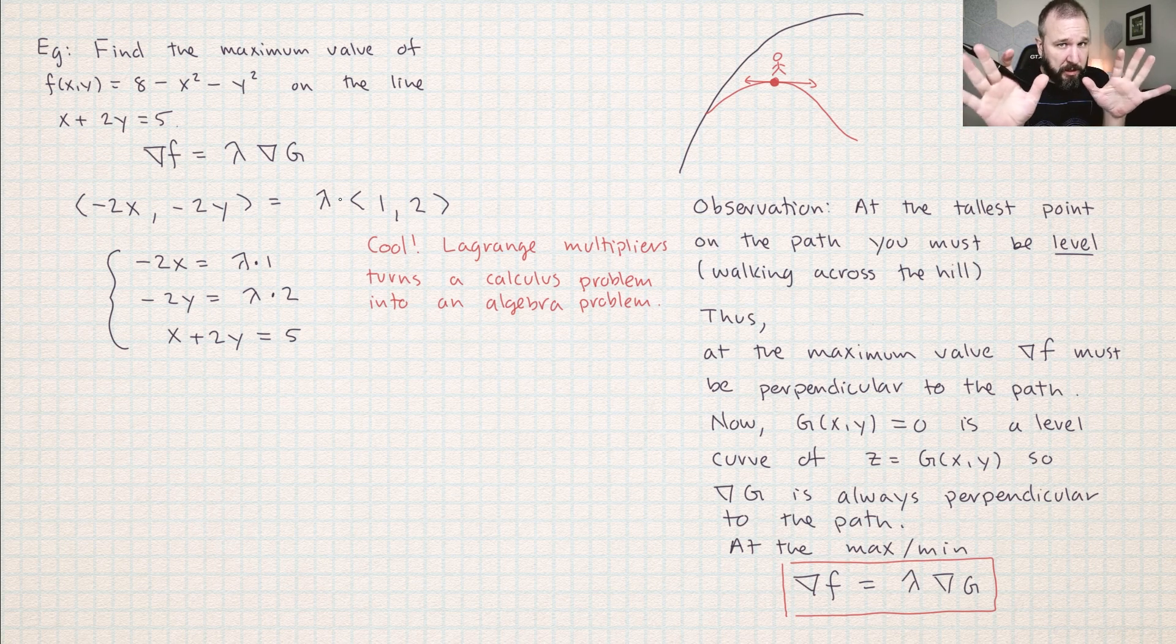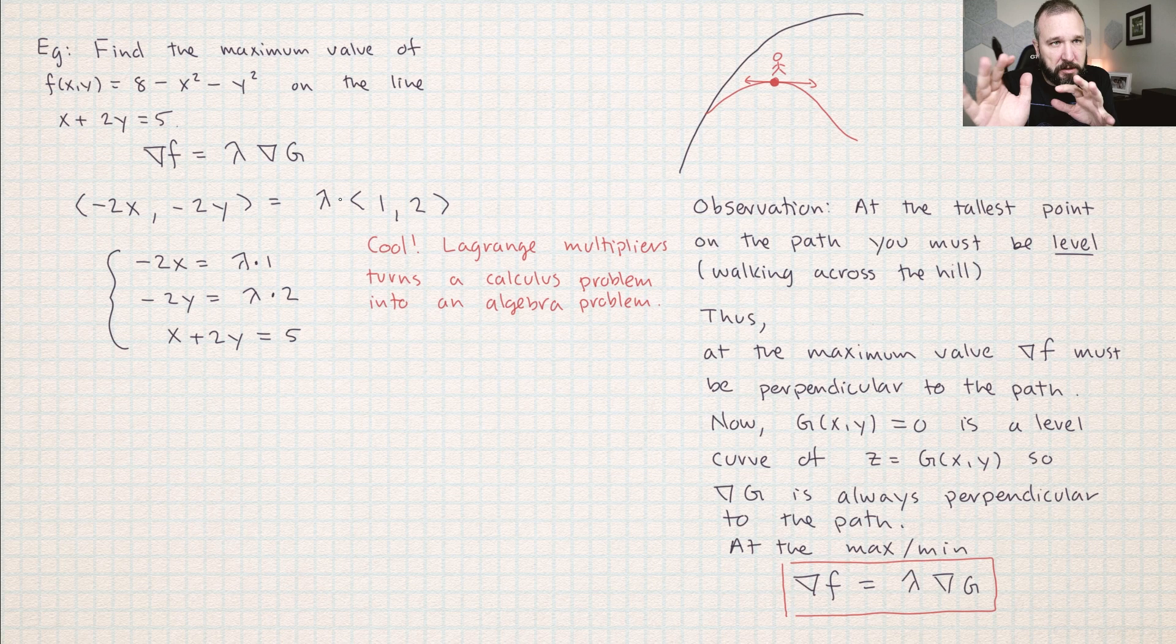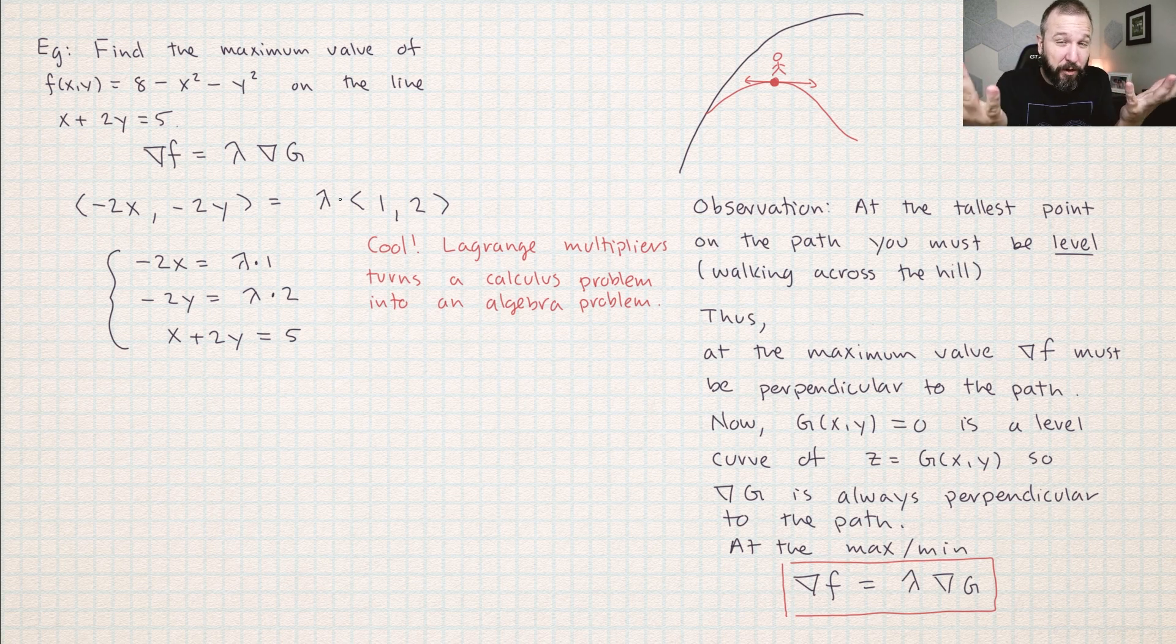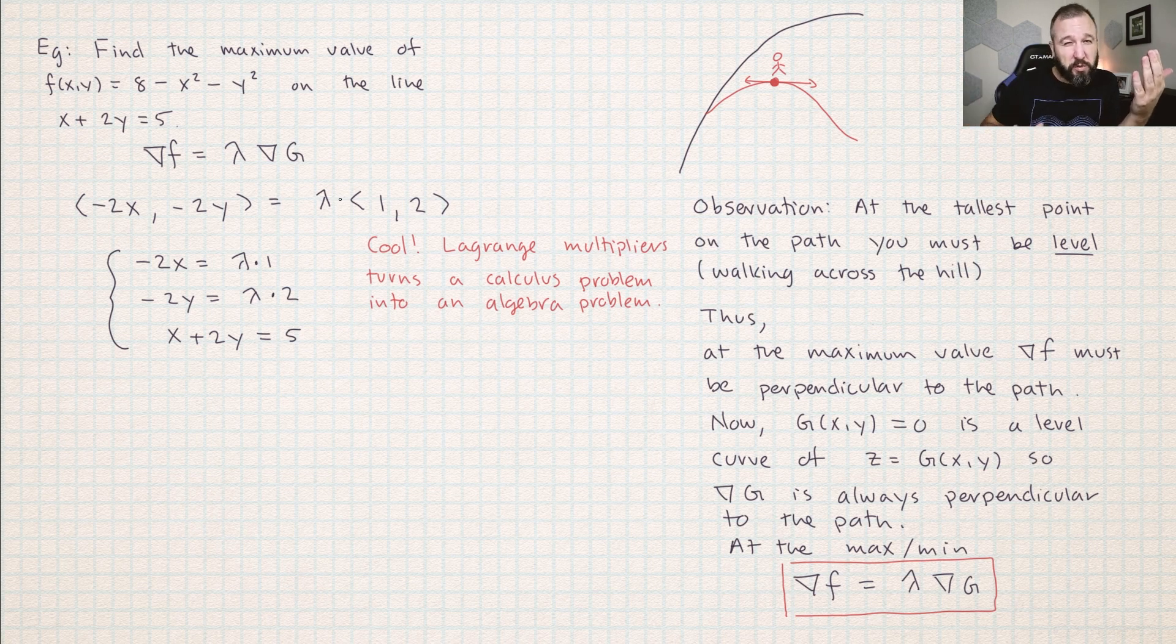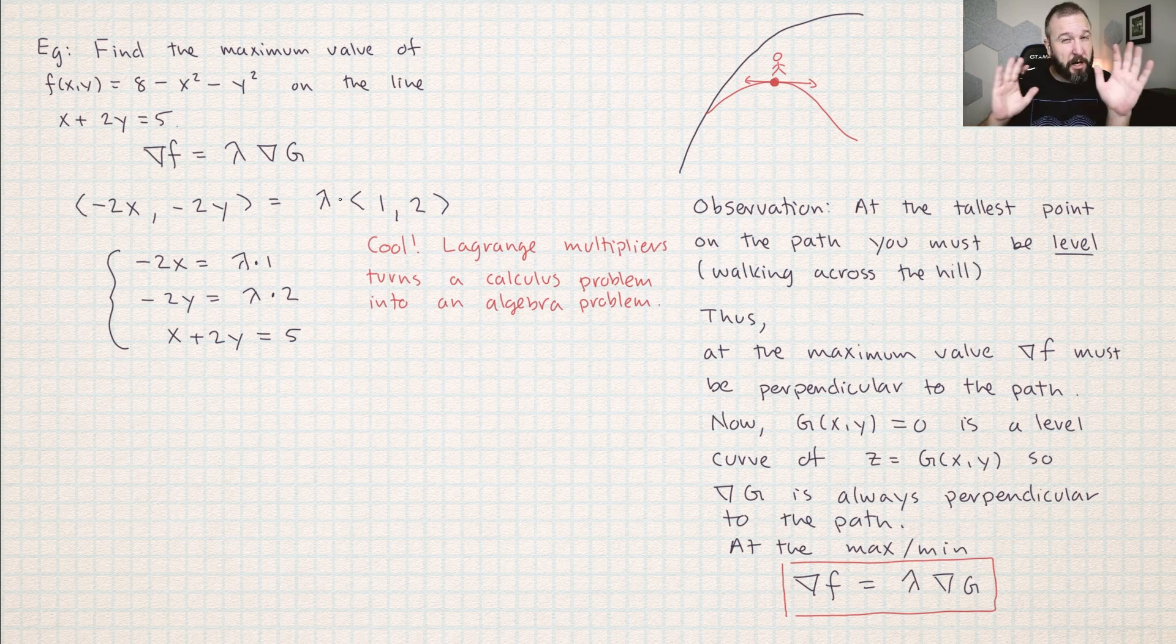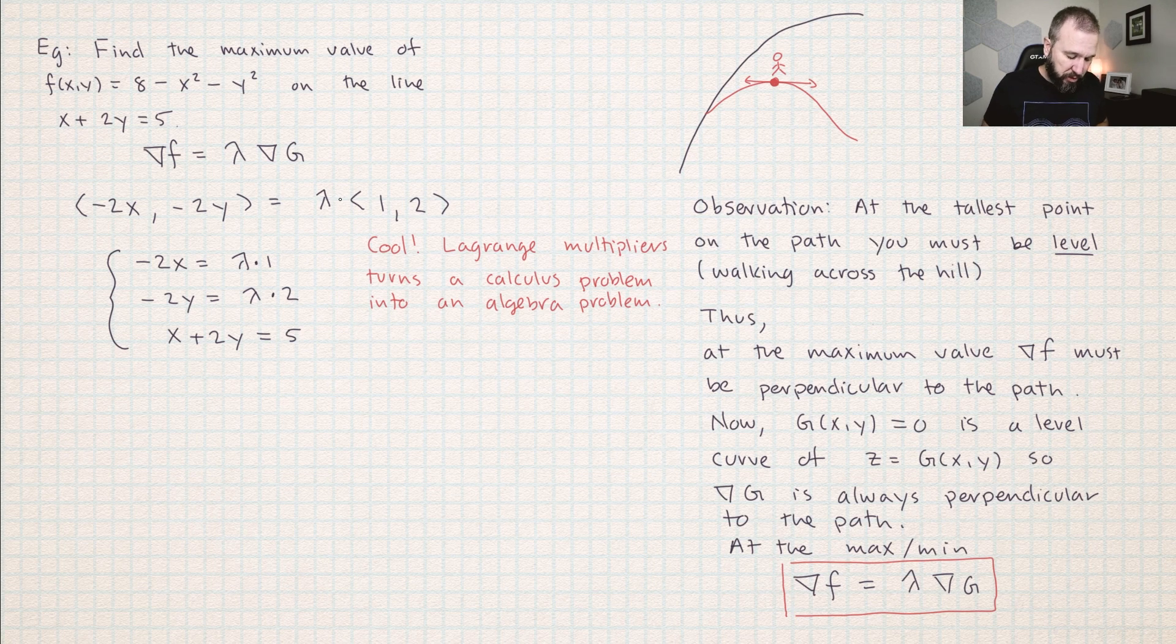Now we really get a taste for the power of the method of Lagrange multipliers. Big picture, what it does is it takes a calculus problem and turns it into a problem about solving a system of equations. I can tell you the computer scientists in the class are just frothing at the mouth right now because computers are so good at solving systems of equations. Calculus problems can be really hard - product rules and quotient rules can be really computationally inefficient, especially if you have a bunch of variables. But just solve a system of equations, computers are really good at that.